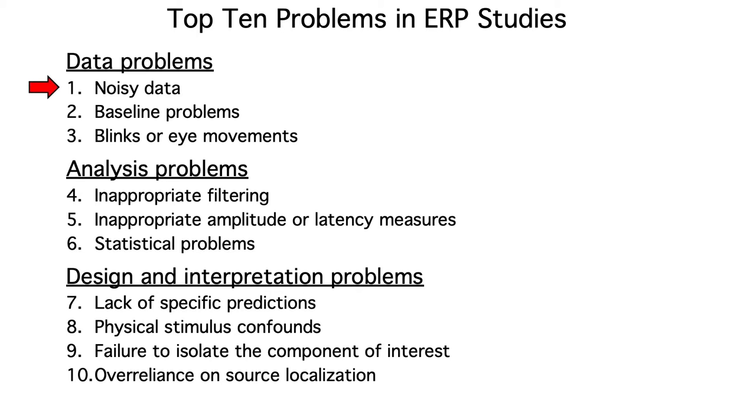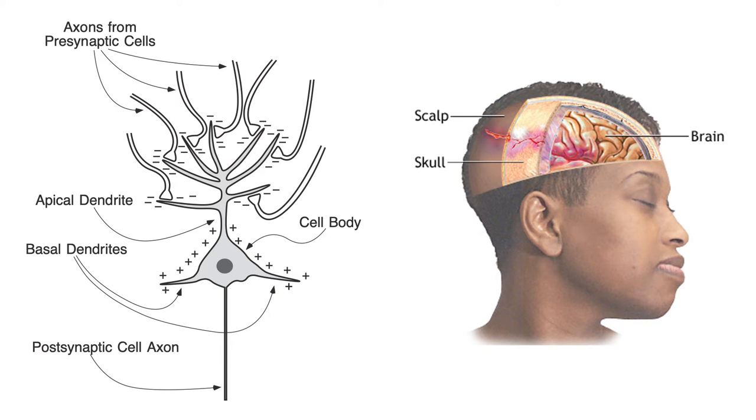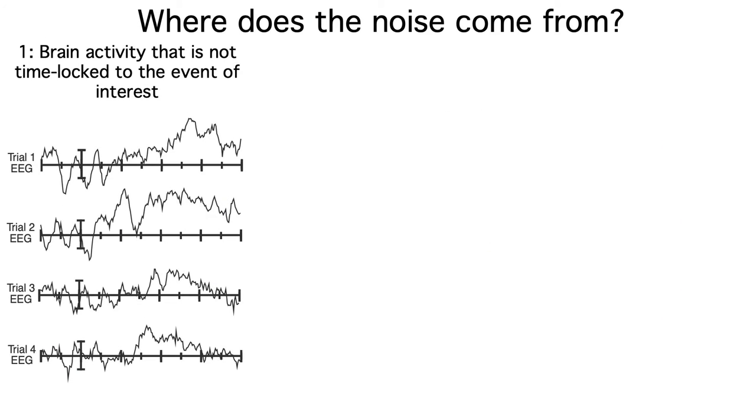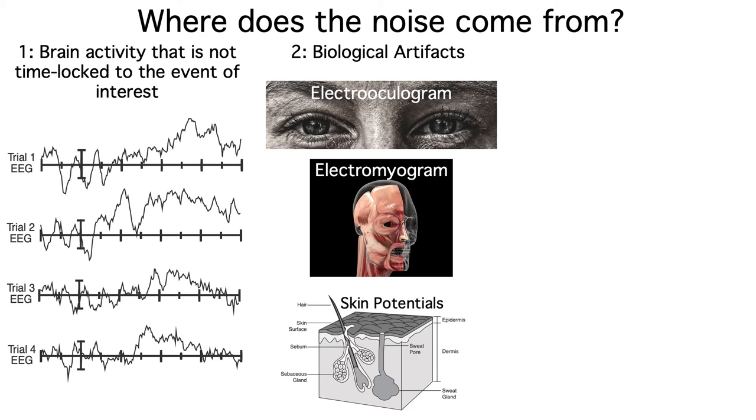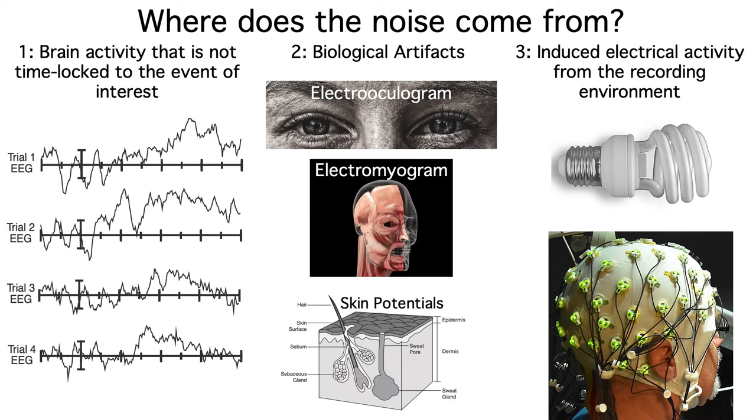Problem number one is noisy data. By the time the voltages get from the neurons to the scalp, they're pretty small, and they're embedded in lots of noise. We have EEG activity that isn't related to our stimulus, like alpha band oscillations. We have biological artifacts coming from the eyes, the muscles, and the skin. And we have electrical devices in the environment that induce the flow of current through the electrodes.